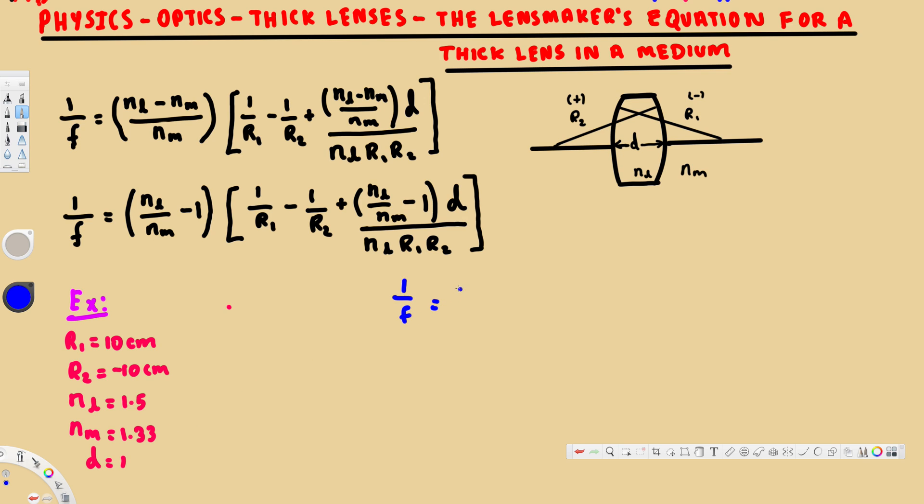First, we have 1 over f equals NL minus NM. NL is the index of refraction of the material of the lens, that's glass, which is 1.5. 1.5 minus 1.33 divided by the medium, which is 1.33.